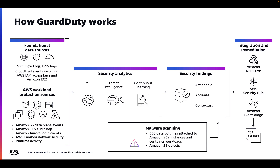Kubernetes audit logs to detect suspicious Kubernetes behaviors such as launching privileged containers or successful anonymous access, and RDS login activity to detect suspicious login activity with RDS, and S3 data events to detect potential data exfiltration.